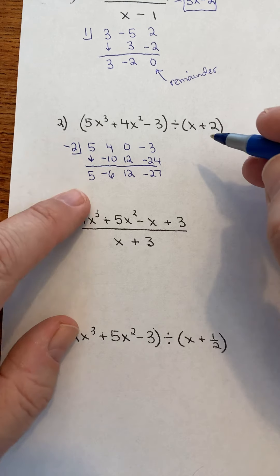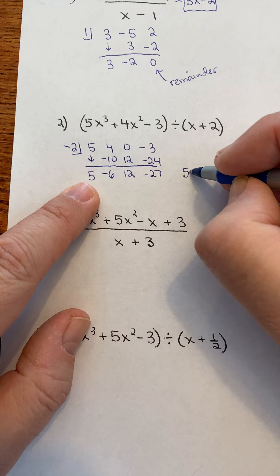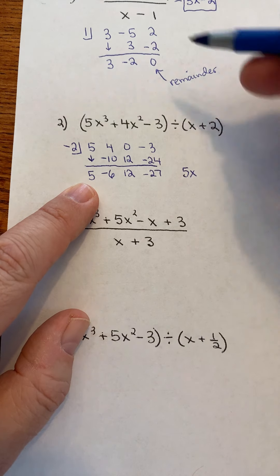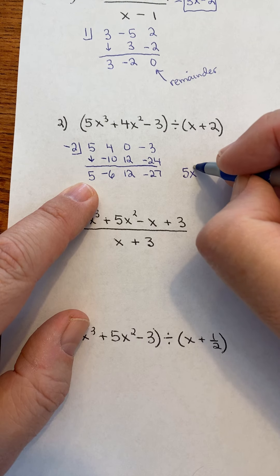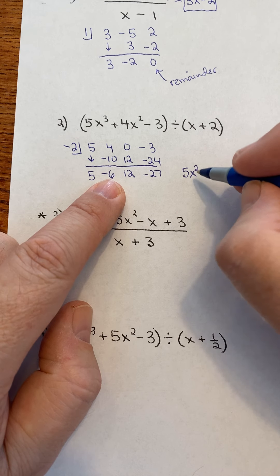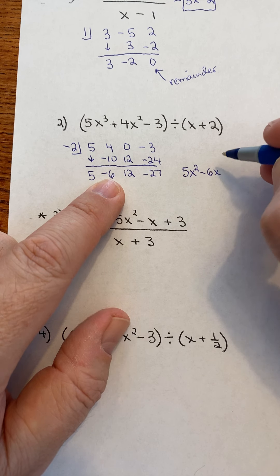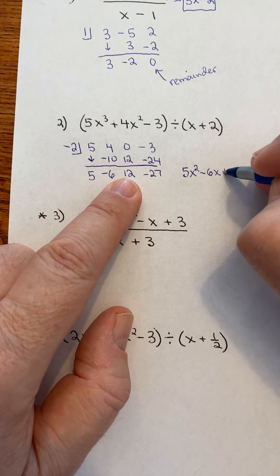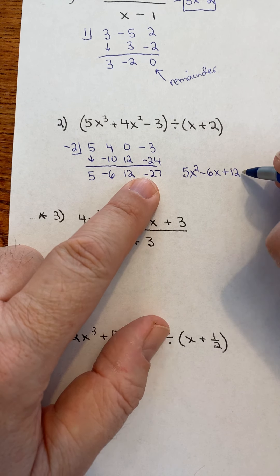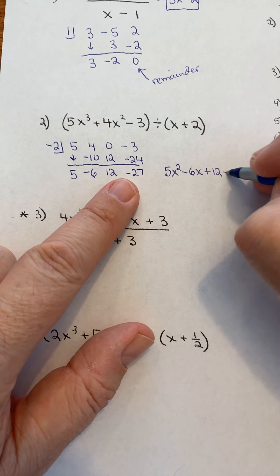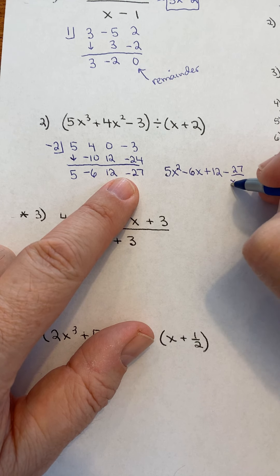And my answer, this is the coefficient, or we call the leading coefficient of our answer, our quotient. And I take 1 away from the exponent here that we started with. So, it would be 5x to the second minus 6x to the 2 minus 1 would be 1 plus 12. That's my constant term. And this represents my remainder. And if you remember, in long division, we wrote the remainder over the divisor.